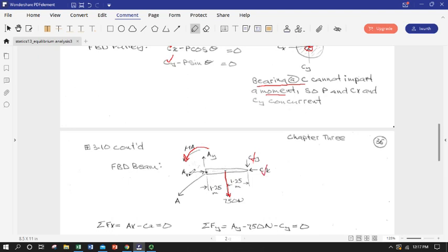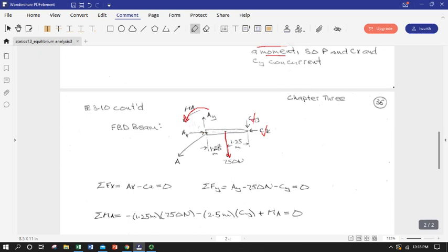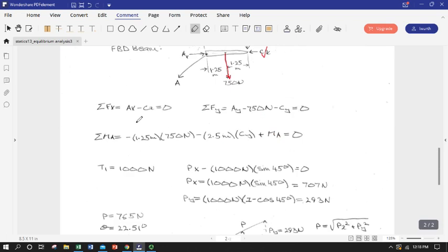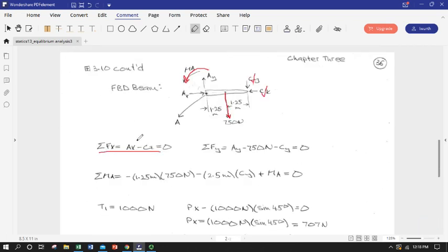And then those will be knowns in the beam FBD, leaving us one, two, three unknowns, which is just the wall support. And we have a two dimensional situation. So we should get three equations of equilibrium. So we should be able to solve for all three of these here. So we should literally be able to walk through the FBDs and solve directly and not have to go back and reinsert. So we have these set up.